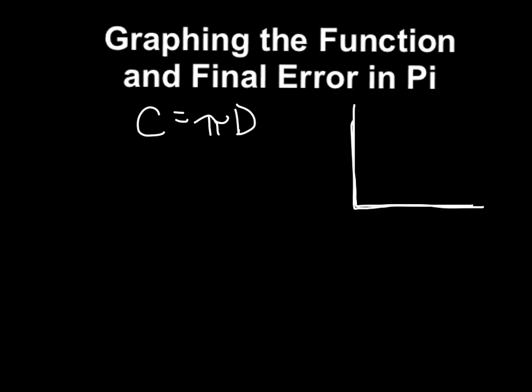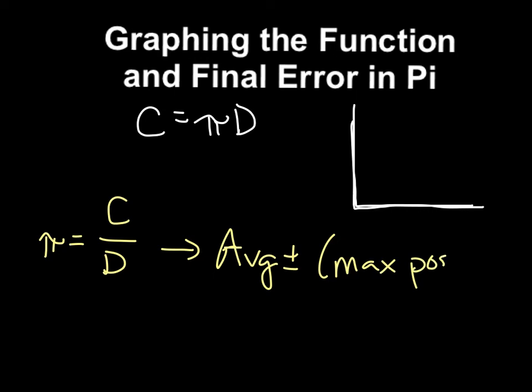Let's talk about the final thing we're going to do in this lab, which is make a graph and use the graph to get our value of pi. Your value of pi will have error in it. For each object, you will calculate your uncertainty as pi equals c over d. And then since this is a big value, it will be average plus or minus max possible value minus your average. That's how you'll get it just from looking at your numbers.